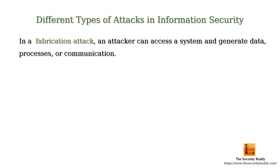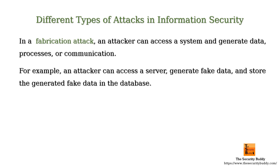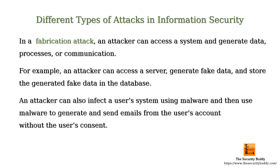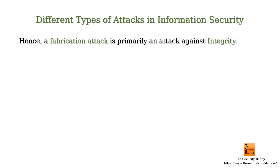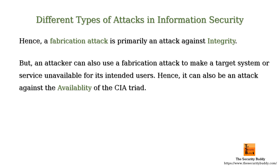In a fabrication attack, an attacker can access a system and generate data, processes, or communication. For example, an attacker can access a server, generate fake data, and store it in the database. An attacker can also infect a user's system using malware and then use that malware to generate and send emails from the user's account without the user's consent. Hence, a fabrication attack is primarily an attack against integrity, but an attacker can also use a fabrication attack to make a target system or service unavailable for its intended users, making it an attack against availability as well.